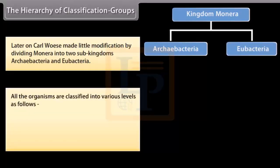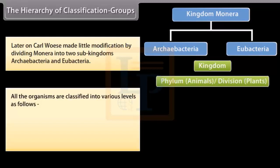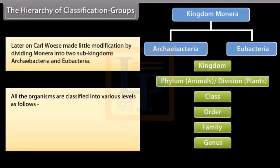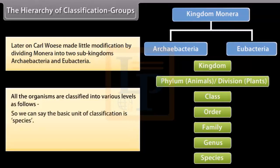All organisms are classified into various levels: Kingdom, Phylum (for animals), Division (for plants), Class, Order, Family, Genus, and Species. The basic unit of classification is Species.